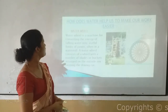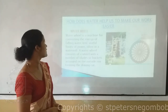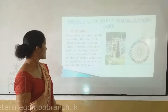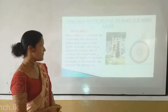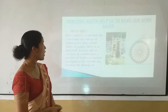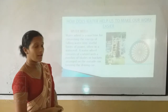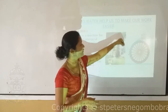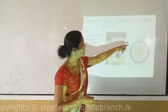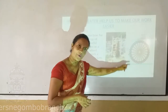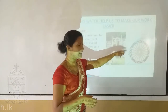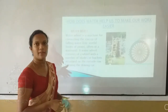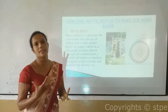A water wheel is a machine for converting the energy of flowing water into a useful form of power, often in a water mill. A water wheel consists of a wheel with a number of blades or buckets arranged on the outside, forming the driving mechanism. These buckets fill with water, and because of the weight of the water, the water wheel starts to rotate. This is the first stage of processing electricity using water — a very helpful way to make our work easier.